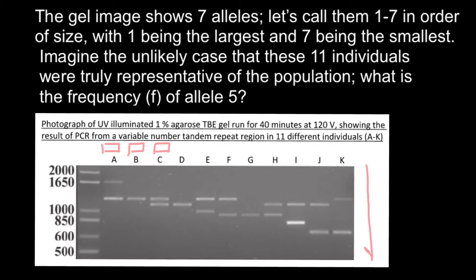DNA is moving from this side to this side. So this allele is the largest and these two alleles are the smallest. The largest alleles traveled a small distance, and in the same period of time the smallest alleles traveled a longer or greater distance.